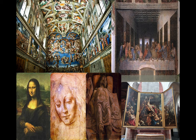Here are some examples. We've got the Sistine Chapel on the left, done by Michelangelo — his Last Judgment, and he also did the ceiling. There's some da Vinci on the bottom left with the Mona Lisa, what appears to be a self-portrait or self-sketch of him, and his Last Supper. There's also a painting of Jesus being laid to rest and another of Jesus on the cross. As you can see, a lot of the artwork is religious, because it was still a very religious time, though the Mona Lisa is an example of individualism.